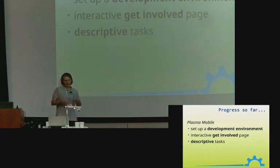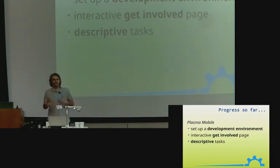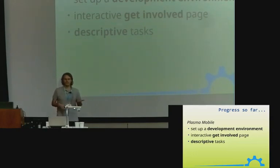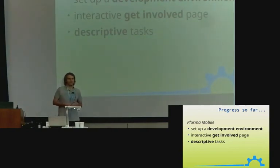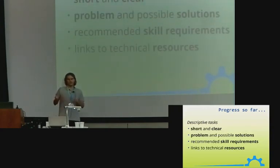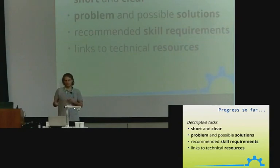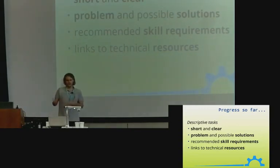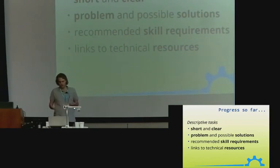The Plasma Mobile team has been active on doing some things. They set up a comprehensive guide on setting up a development environment so people can get involved and find their way into Plasma more easily. They set up an interactive Get Involved page — a fork of Mozilla's work — that helps guide you depending on your interests and responses to find your first contribution. They have also been creating descriptive tasks: short, clear descriptions of the problem, possible solutions for the newcomer, any requirements needed, and links to the technical resources and skills required to start contributing.